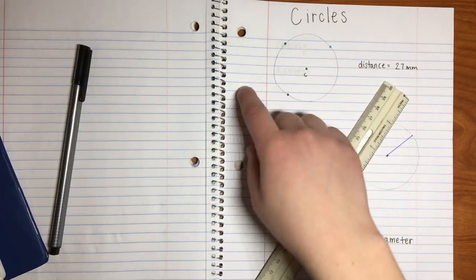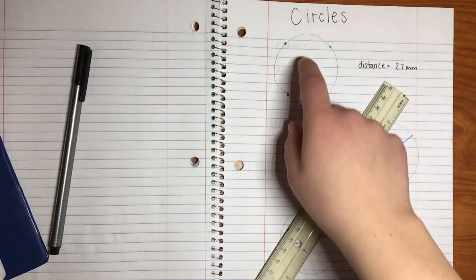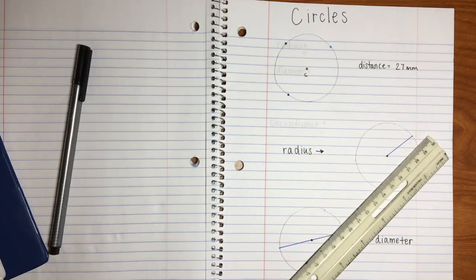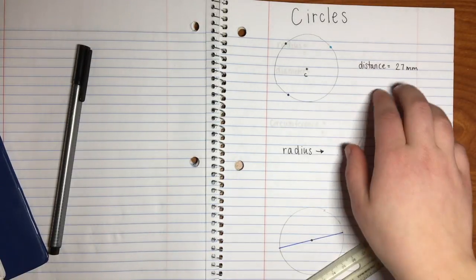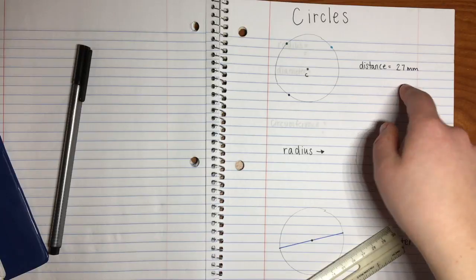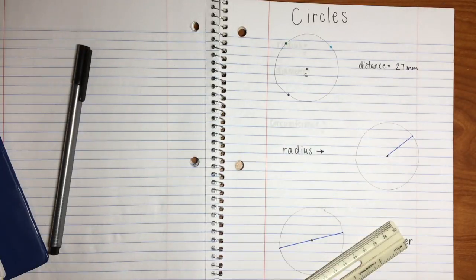Therefore, because all of those distances are equal to the center point, we know that this would be a circle. So right here, we have the distance is 27 millimeters between each point to the center.